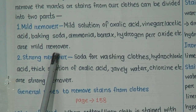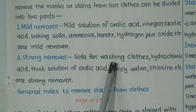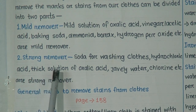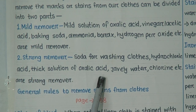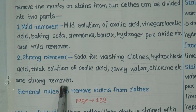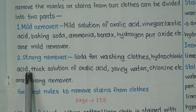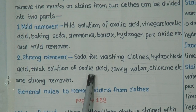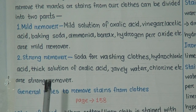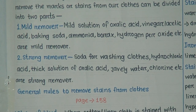Strong removers include: soda for washing cloths, hydrochloric acid, thick solution of oxalic acid, jargon water, chlorine, etc. We cannot use strong removers in a large portion because they can damage our cloths.